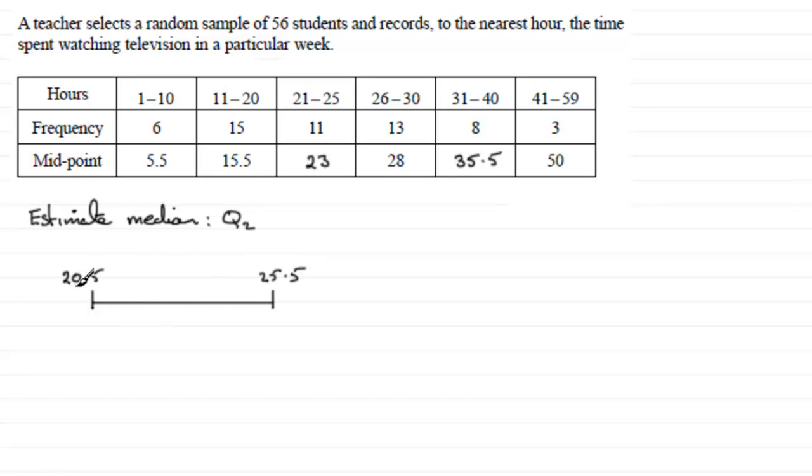And up to 20.5 you've got a total of 21 values. So I would mark 21 in here. And up to 25.5 you've got 6, 15 and 11 values. A total of 32. If you add 6, 15 and 11. So I'd put 32 here.